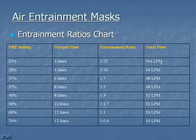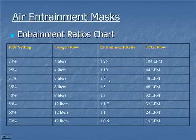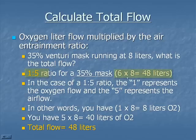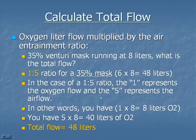The calculation is simple — if you're calculating total flow, you need to know the entrainment ratio or use the magic box. Add the two ratio numbers together and multiply by the oxygen flow. For 31%, you have 1 plus 7 is 8, times 6 is 48 — that's your total flow. For example, a 35% Venturi mask running at 8 liters: the ratio is 1 to 5, so 6 times 8 equals 48 liters total flow. The 1 represents 1 times 8 equals 8 liters of oxygen, and the 5 represents 5 times 8 equals 40 liters of air.